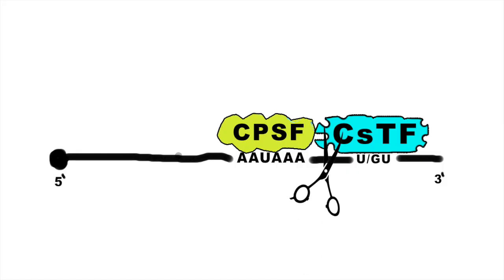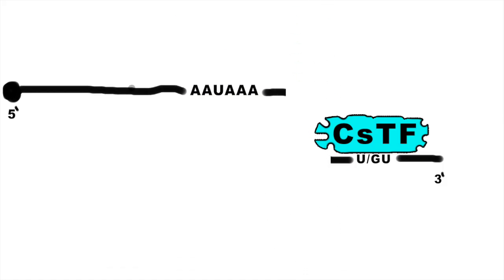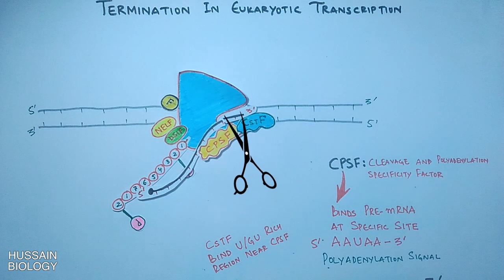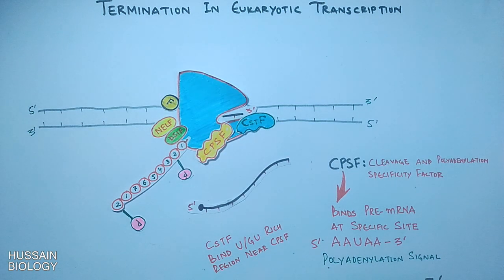And then the cleavage occurs here in between these two factors. If we see this on complex diagram, it's here where the cleavage occurs and we get the pre-mRNA molecule.